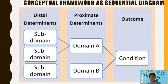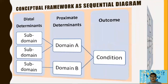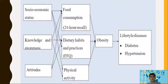When we say conceptual diagram, it is similar to the flowchart. Here you have the sub-domains of your main concepts as an initial or input concept, and you come up with an output concept. For example, the key concepts — socioeconomic status, knowledge, and awareness — along with attitudes, lead to outcomes such as lifestyle, diseases like diabetes, or hypertension.